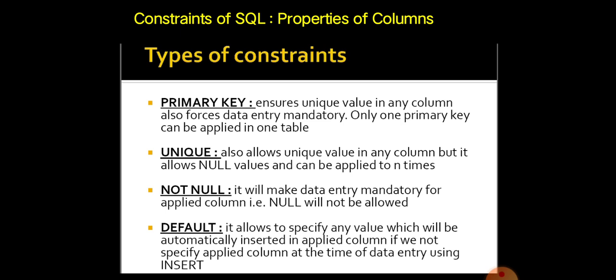The first one — primary key — ensures unique values in any column and also forces data entry mandatory. Only one primary key can be applied in one table. When we give a primary key constraint, the compiler checks whether the value is unique — it should not have any duplicate values in that particular column, and it should not be a null value. We have to enter data in that particular column if it has a primary key constraint. Normally, we give the first column — such as employee number, roll number, product ID, department ID, or location ID — as the primary key for uniqueness.